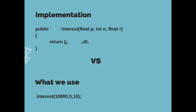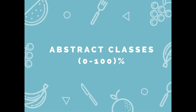There are two ways to implement abstraction in Java — one being abstract classes and the other being interfaces. Abstract classes provide 0 to 100% abstraction, which I'll explain shortly.